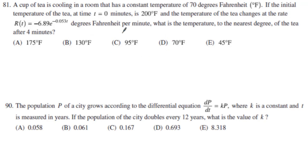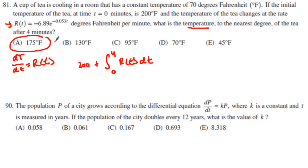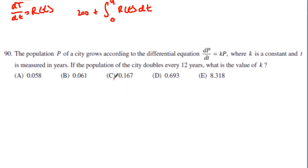Number 81 — we can use a calculator. The rate dT/dt equals R(t). We want to know the temperature after four minutes, so in our calculator we integrate R(t) from 0 to 4. Adding 200 to this integral, we find the temperature goes down about 25 degrees Celsius, landing at 175 degrees. That one was solved using your calculator to evaluate the integral.